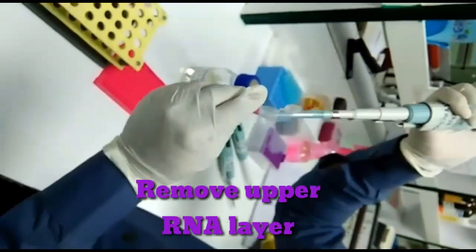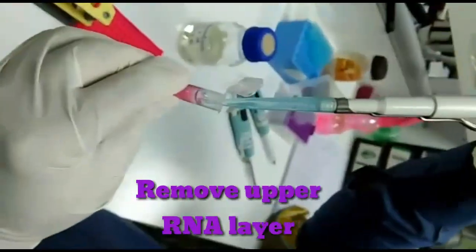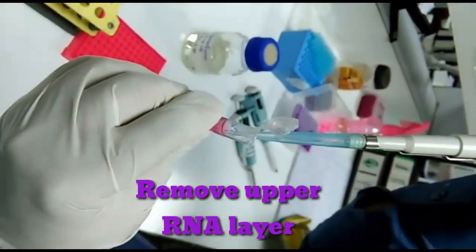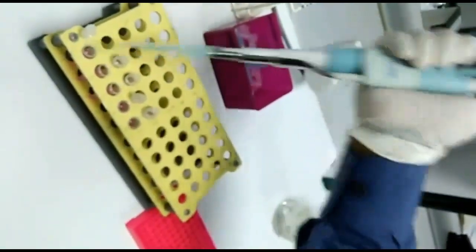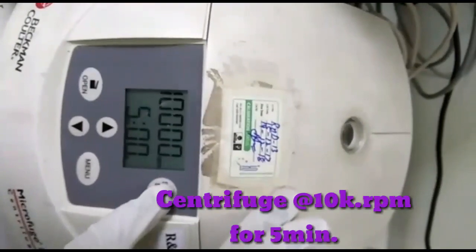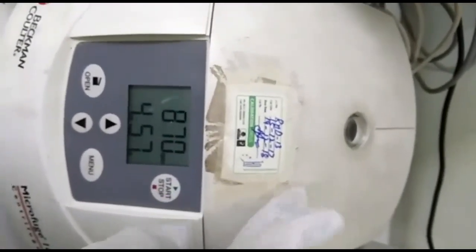After removing the RNA, add 0.3 ml of ethanol 100% and incubate the sample for two to three minutes. Then centrifuge the sample for five minutes at 10,000 rpm.